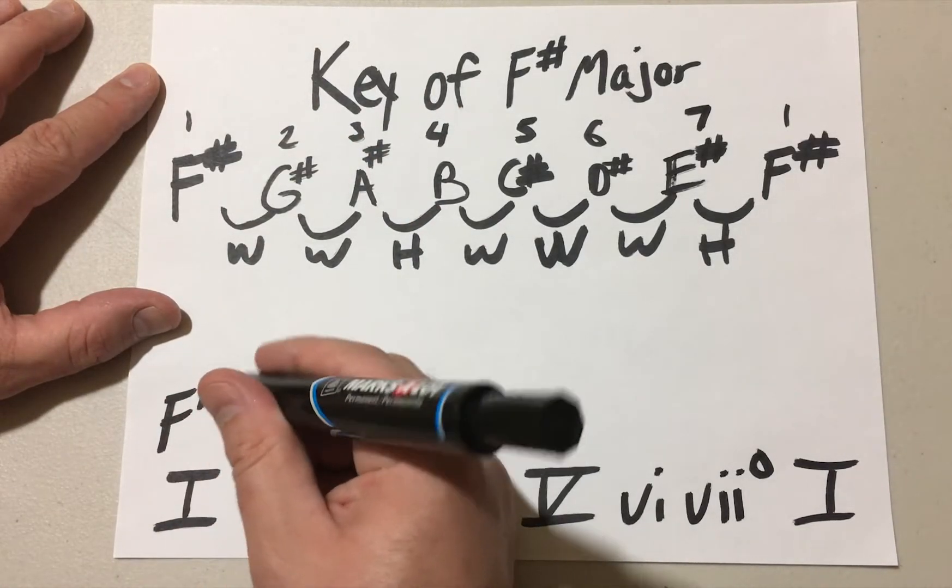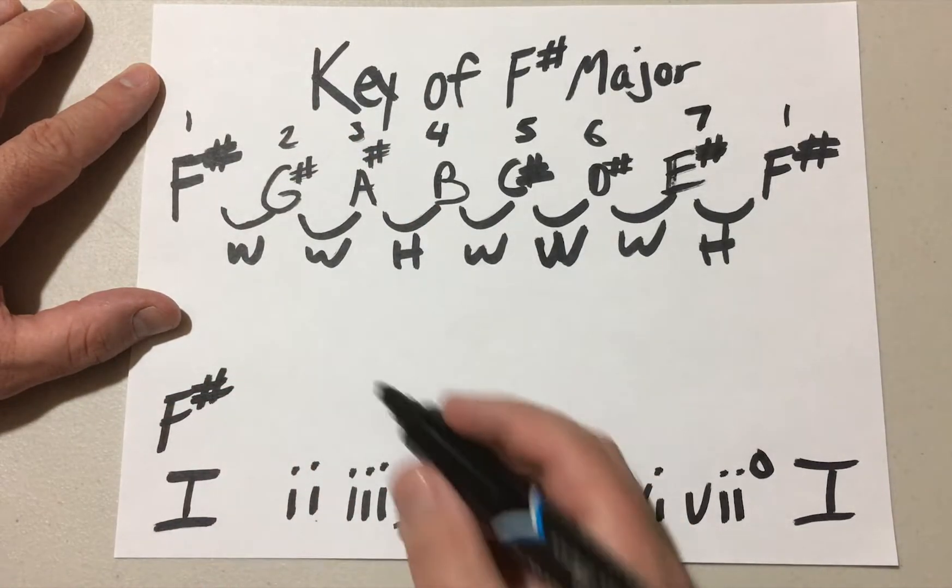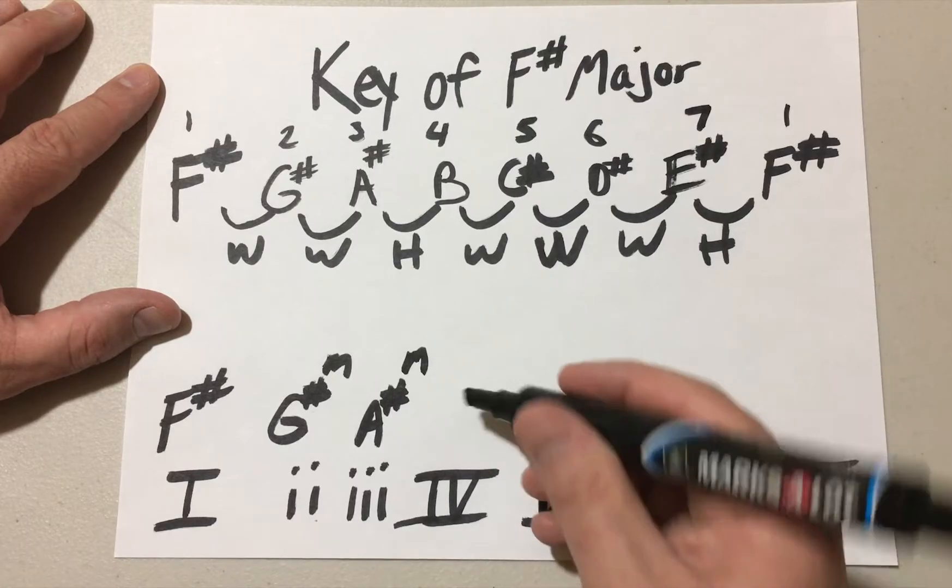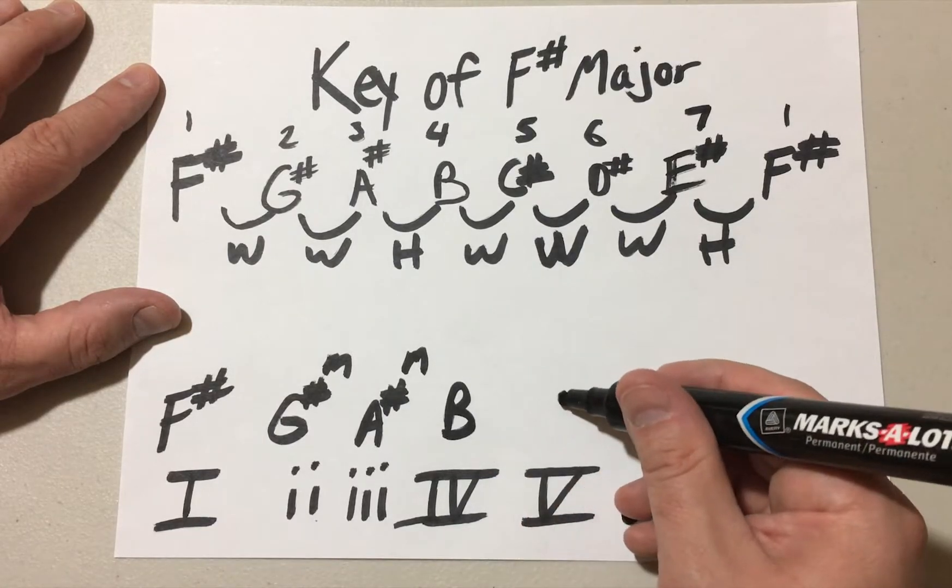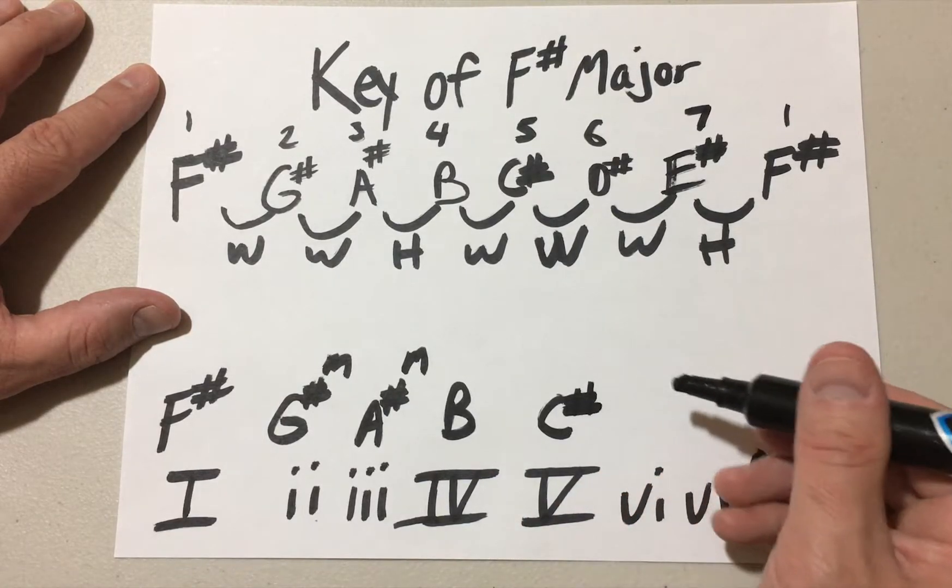And then we have the one again. And then you just assign them accordingly: F sharp major, G sharp minor, A sharp minor, B...